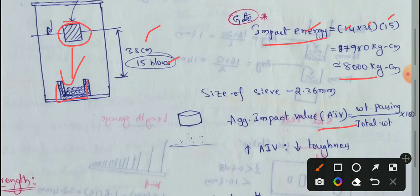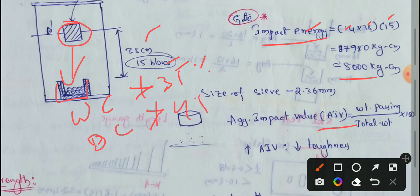As per IRC, the Aggregate Impact Value for wearing course must not be greater than 35%, and for base course must not be greater than 45%.